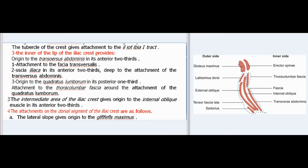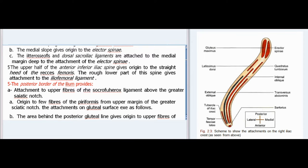The inner lip of the iliac crest provides origin to the transversus abdominis in its anterior two-thirds, attachment to the fascia transversalis, fascia iliaca in its anterior two-thirds (deep to the transversus abdominis), and origin to the quadratus lumborum in its posterior one-third. The intermediate area gives origin to the internal oblique muscle in its anterior two-thirds. The dorsal segment: the lateral slope gives origin to the gluteus maximus, the medial slope gives origin to the erector spinae, and the dorsal sacroiliac ligaments are attached to the medial margin deep to the erector spinae. The upper half of the anterior inferior iliac spine gives origin to the straight head of the rectus femoris, while the rough lower part gives attachment to the iliofemoral ligament.